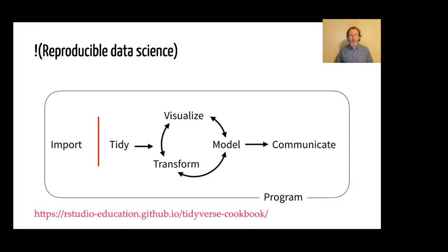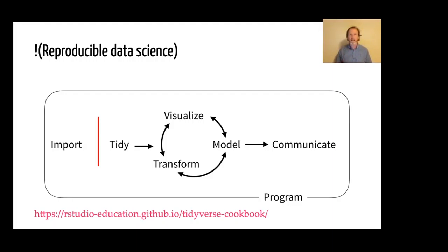Unfortunately, all too often accessing and importing data breaks this reproducible workflow because it's not always readily available. You may have it on your hard drive and no one else has easy access to it. You might have to email it to a collaborator or download it from a website manually. That kind of breaks the scripted workflow, so that importation step becomes a critical link. If we can add it in code, then we make the whole workflow reproducible.